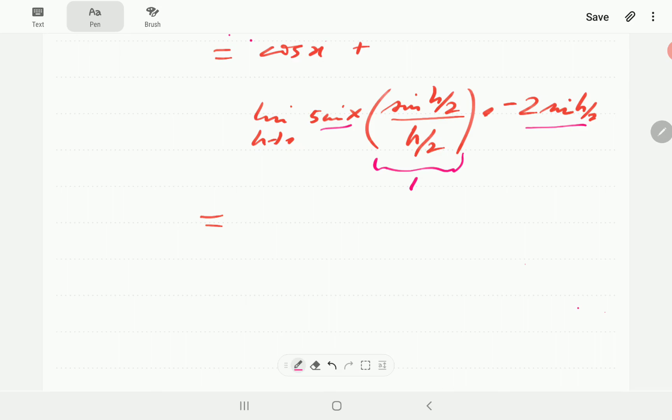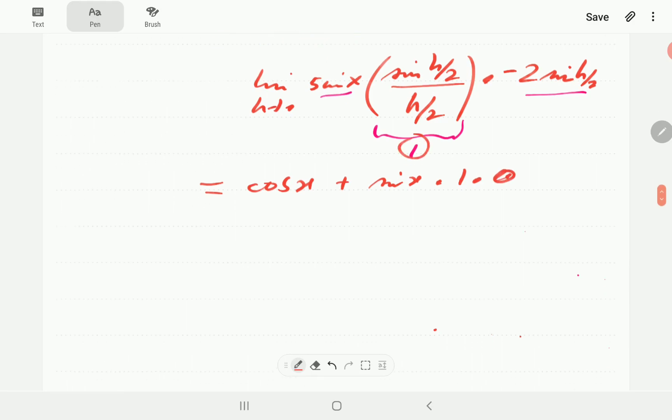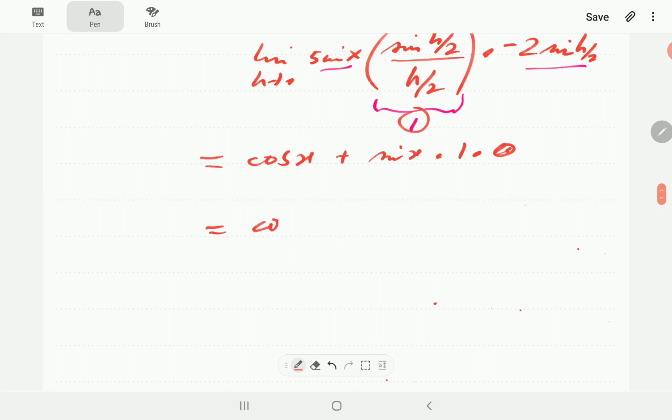So that means, finally, we are going to have cosine x plus sine x times 1, which is this one, and then times 0. So that means we have cosine x, which is the required result.